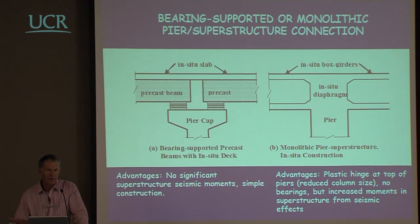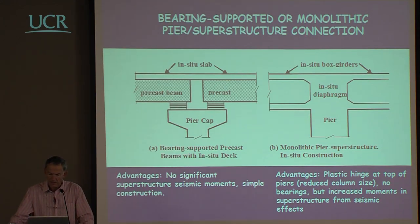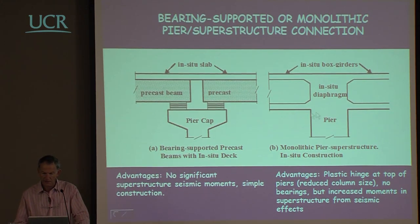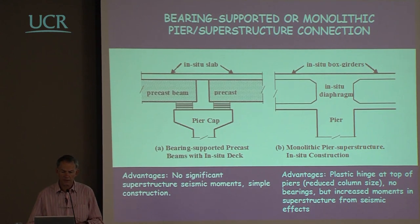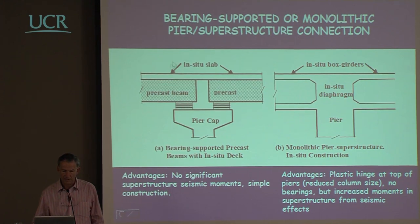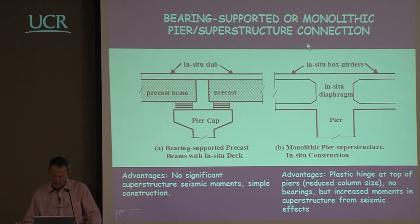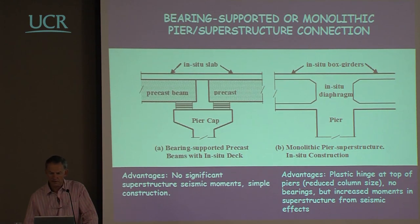Considering the difference between bearing-supported superstructures and monolithic connections: with a bearing-supported system using precast elements there's often a continuous deck slab providing some continuity for seismic and live load moments. The advantage is no significant superstructure seismic moments and simpler construction. The advantage of the monolithic system is that plastic hinges form at the top of the piers, giving a more efficient system for resisting lateral shears with a lower pier size. No bearings also means reduced maintenance costs, though we get increased superstructure seismic moments. The choice between the two types is more a matter of fashion and country than rational analysis.